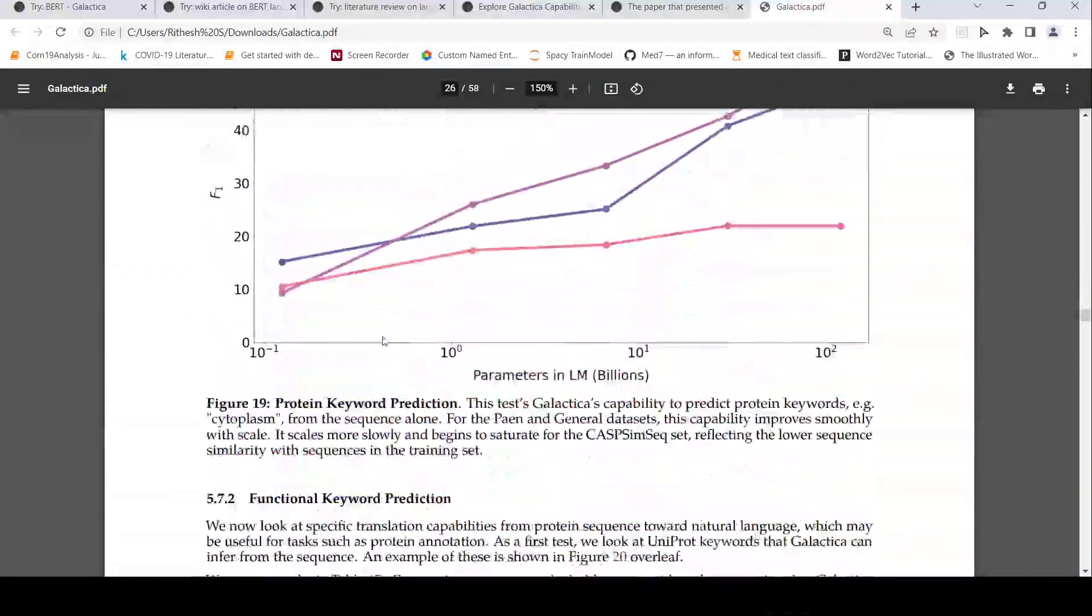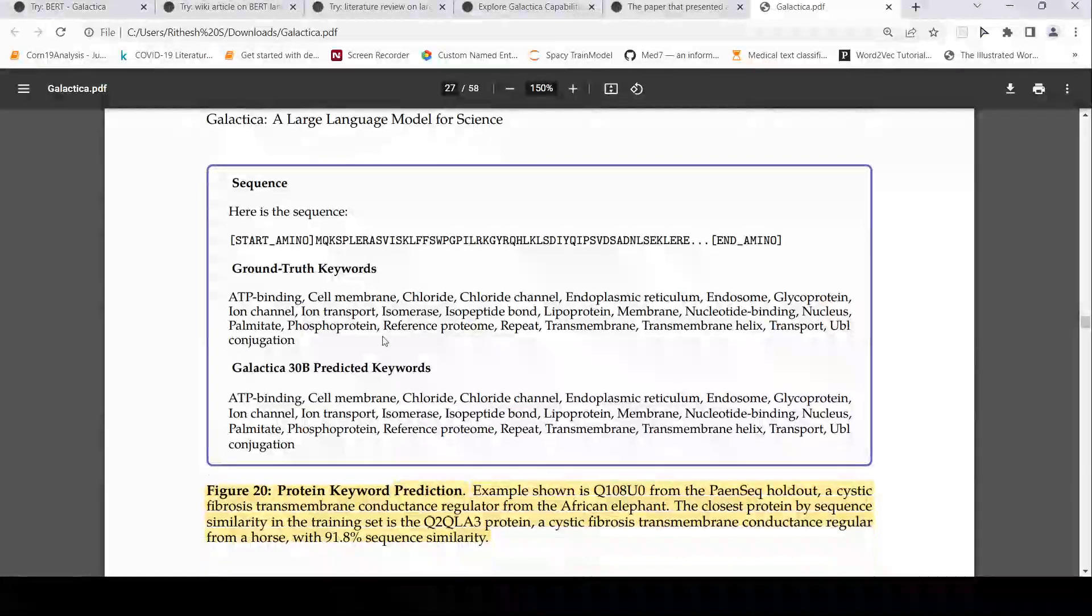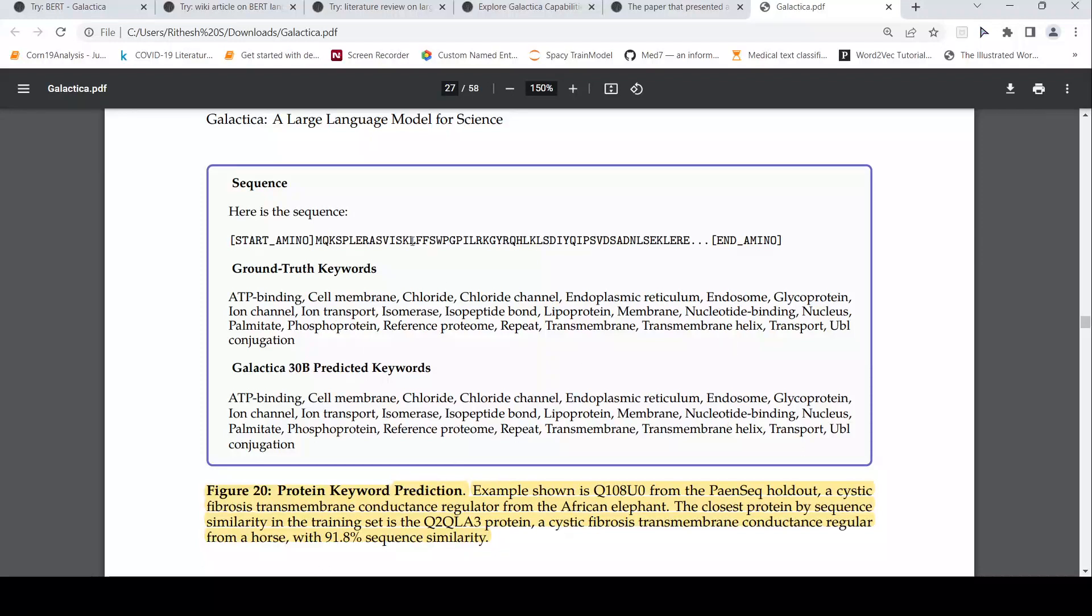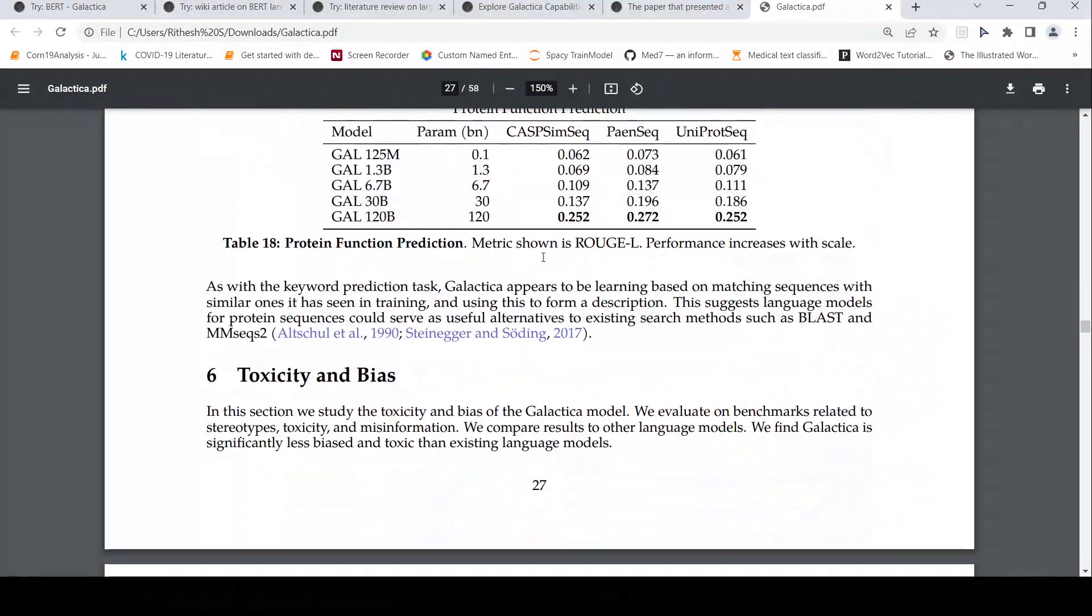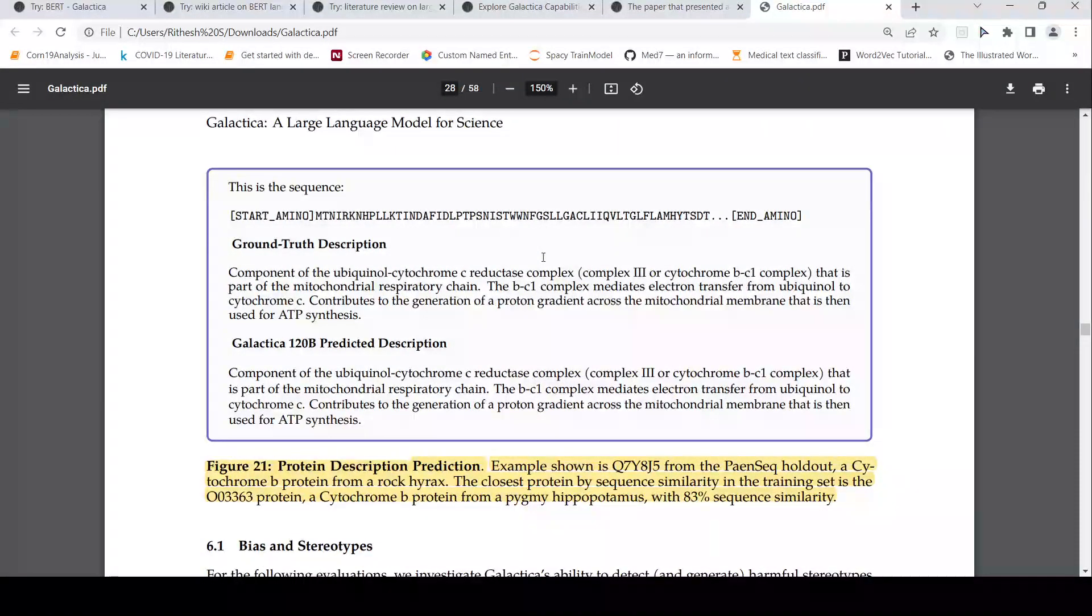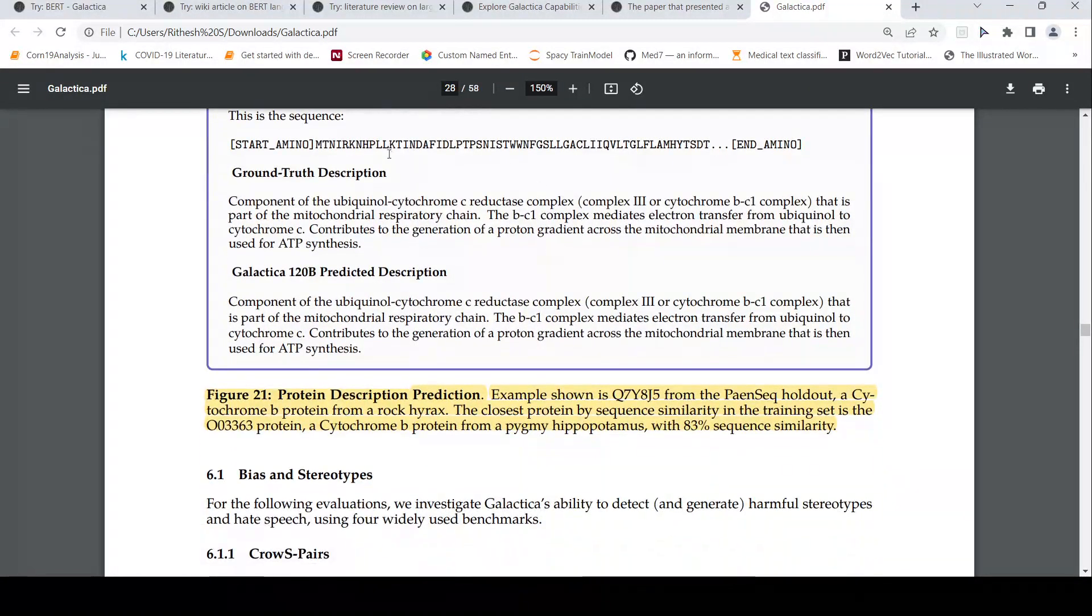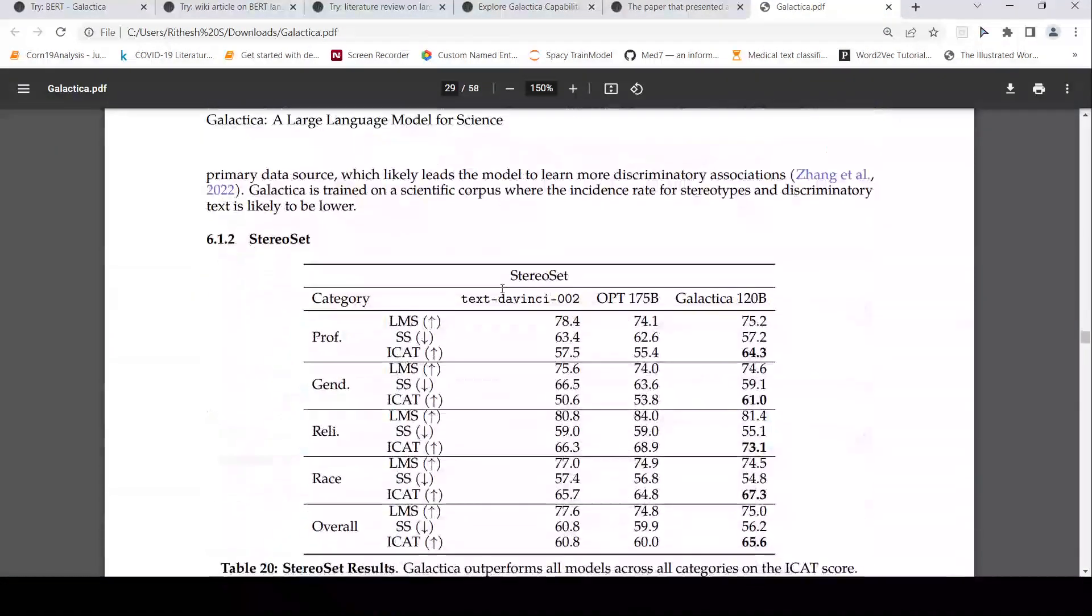What else is there? Let's see something. So here is a sequence and it has to predict some keywords related to this sequence. So protein keyword prediction. There is a protein sequence which is given and then what are the keywords related to this protein. Here is a protein function description is also there. So this is a predicted description of a particular protein, the function of that protein. So given a protein sequence, it tries to predict the function of it. That is also cool.